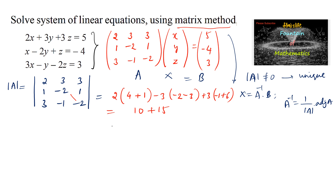So the determinant is 10 + 15 + 15 = 40, which is not equal to 0. Therefore, the given system has a unique solution. Now let's find the adjoint of matrix A.